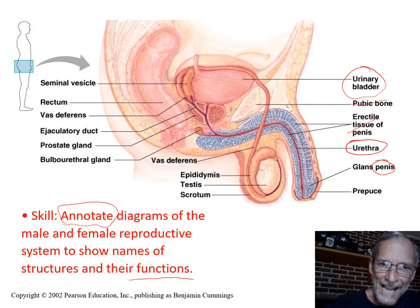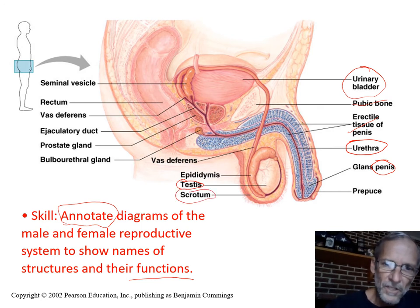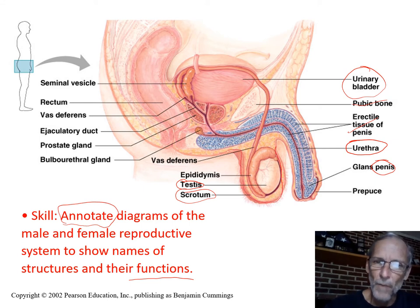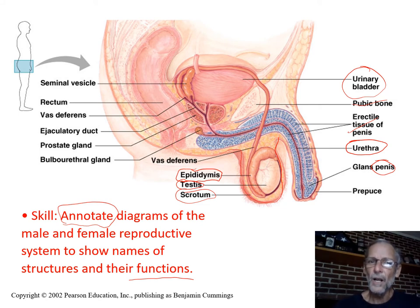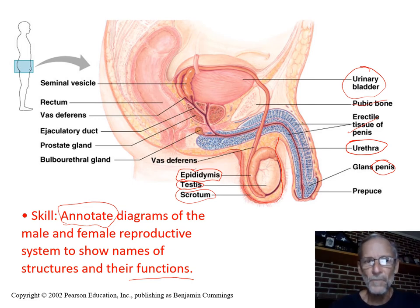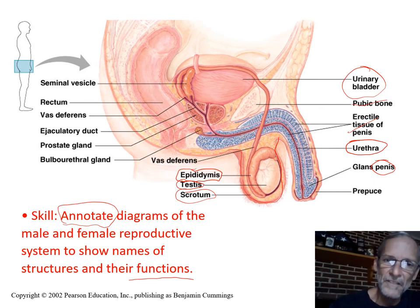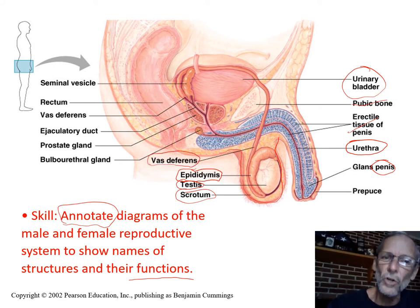Here you have an absolute definite — the testes — because this is where meiosis happens to make gametes. Probably also the scrotum, which is just an evagination of the body wall to hold the testes. I have seen epididymis on a test, though I'm not sure if that was before the last curriculum remake. Vas deferens is a good possibility — it is also called the sperm duct.